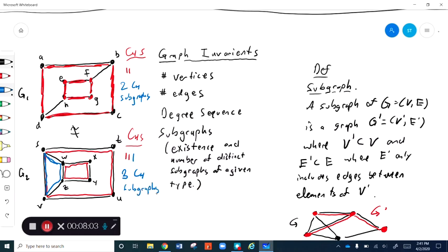Whereas graph G2 has three C4 subgraphs. Now, since the number of distinct subgraphs of a given type is a graph invariant, this information is enough to prove that these graphs are not isomorphic to each other. So there we go. So that's some examples of graph invariants.